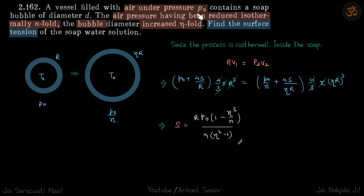A vessel which has air at p0 contains a soap bubble. Air pressure having been reduced isothermally n-fold, the bubble diameter increases eta-fold. Find the surface tension. So we have a bubble placed in atmospheric pressure, and it's given that when the pressure is reduced n times, the radius increases eta times.